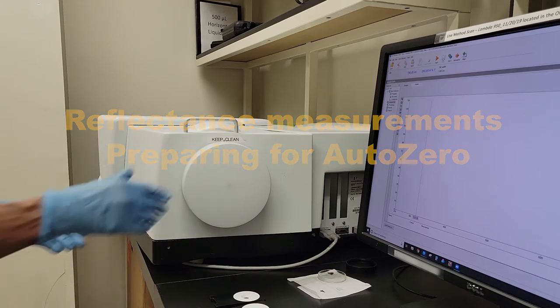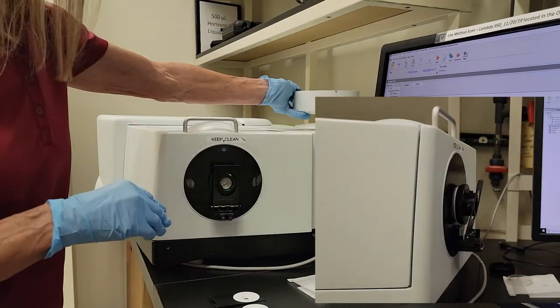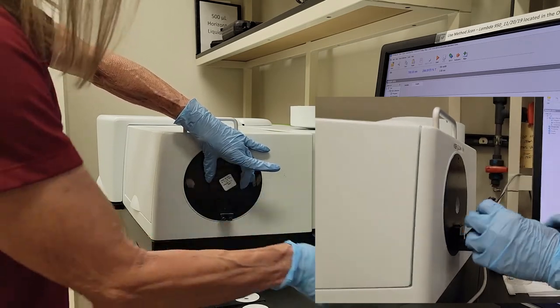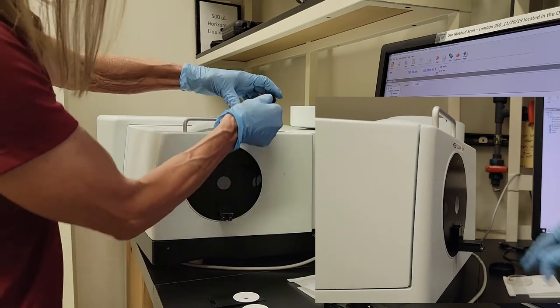For reflection measurements, the setup is easier. Take the back cover off. We slide off the spring-loaded sample holder and reference and the small black piece.